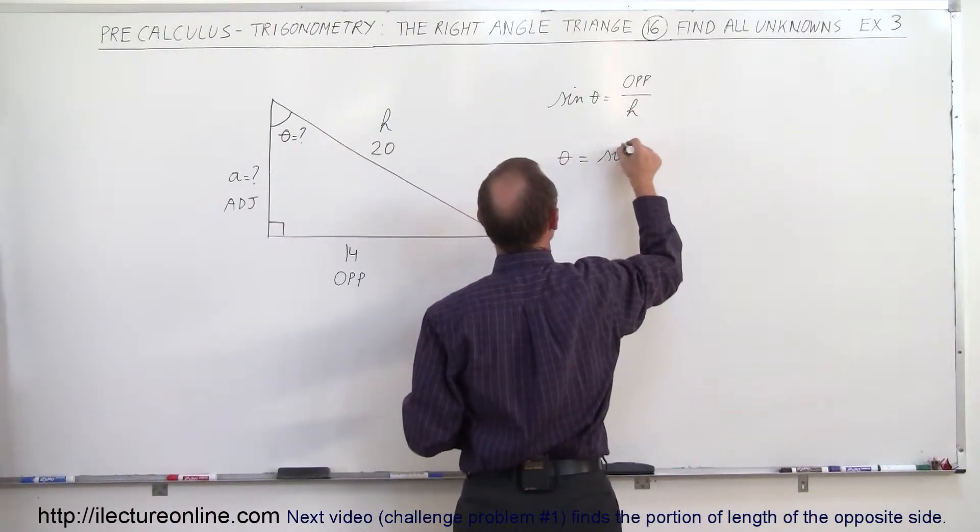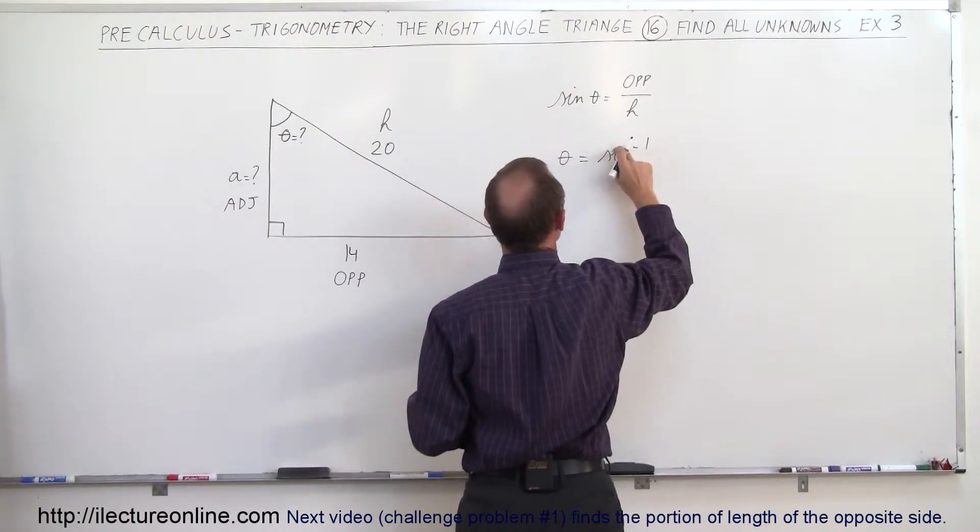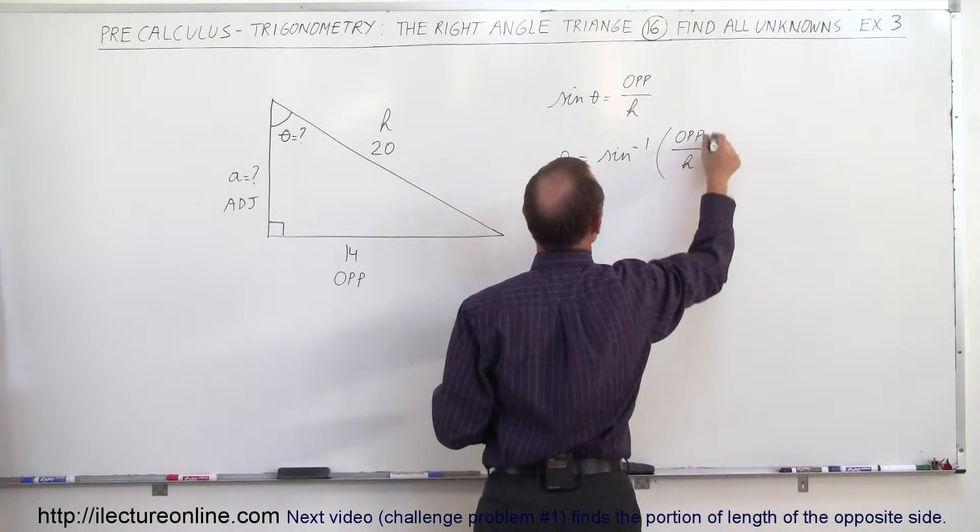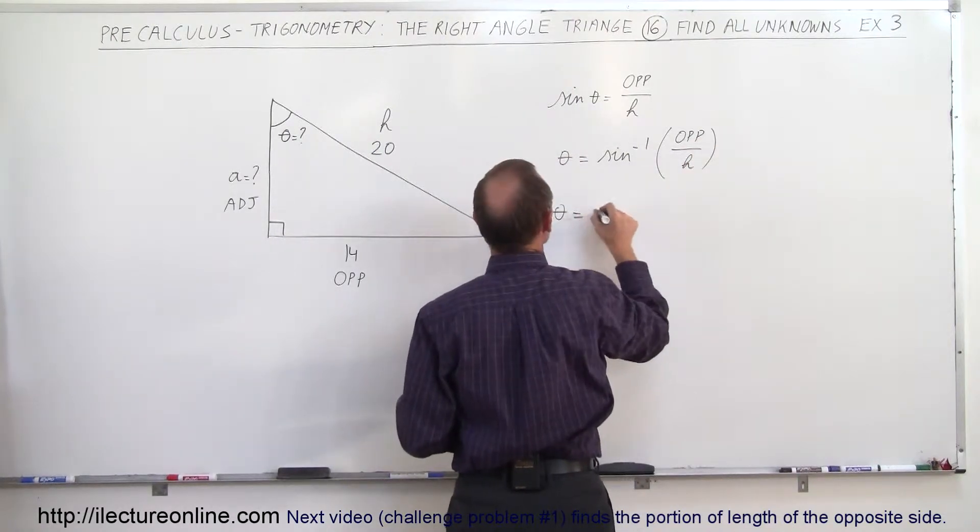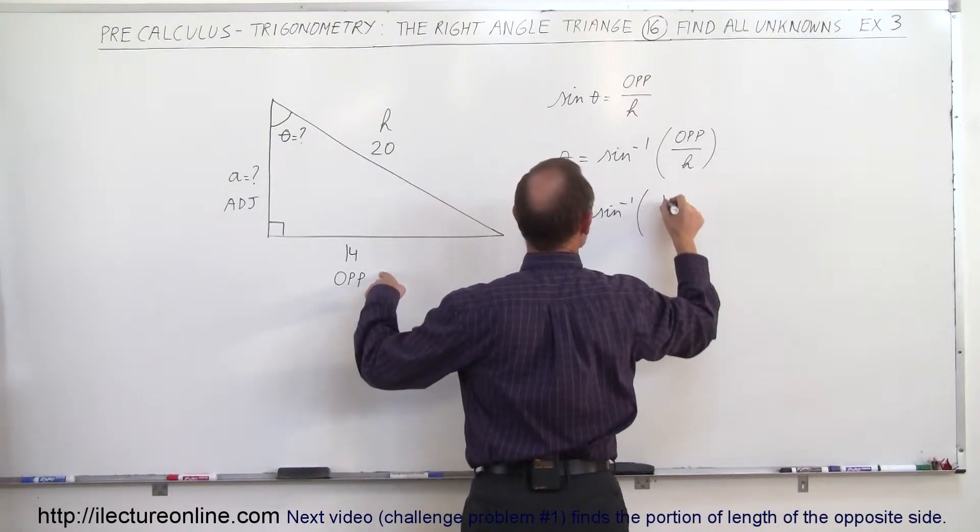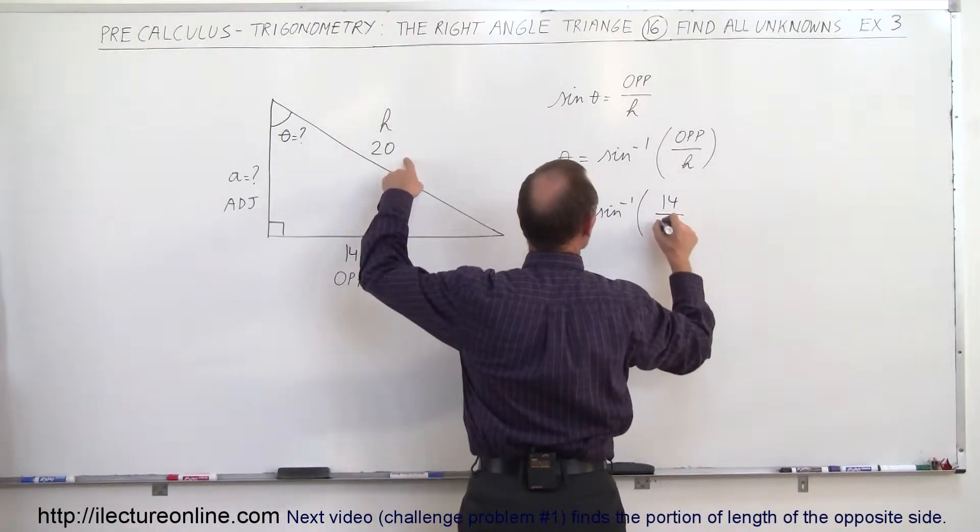The angle equals the inverse sine of the opposite side, which is 14, divided by the hypotenuse, which is 20. Notice it's not a bad idea to label them that way—you're not as likely to make mistakes.